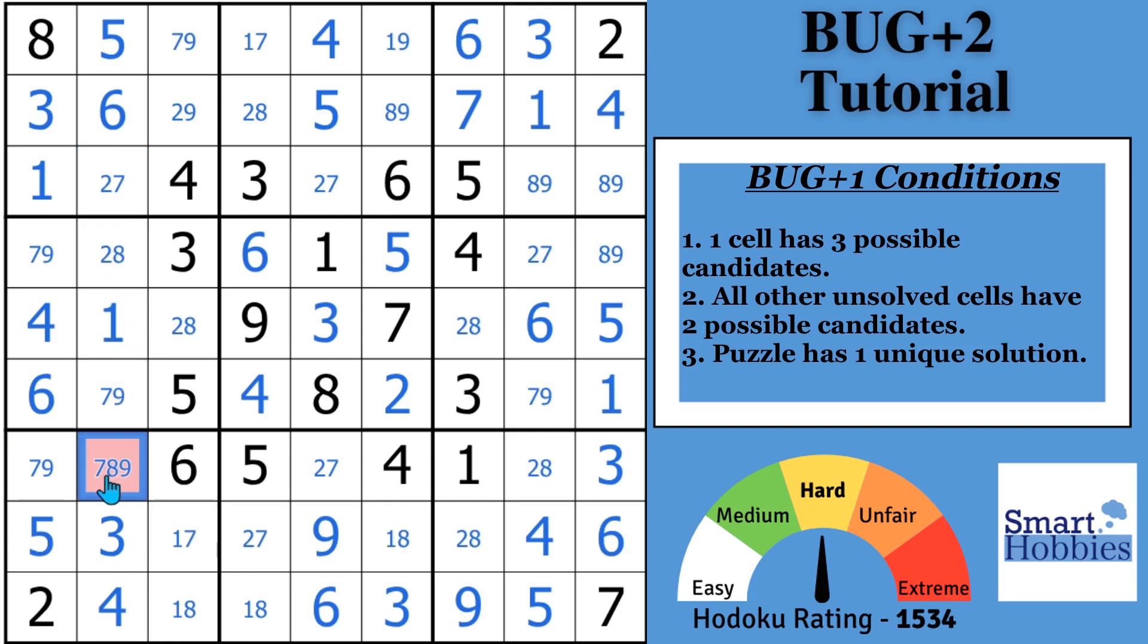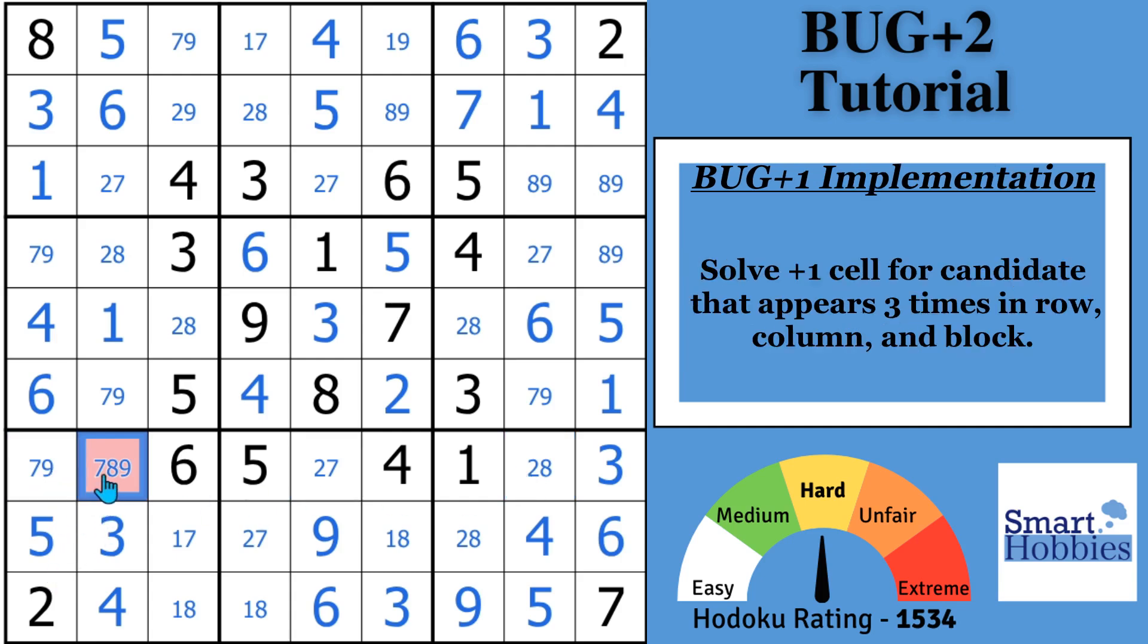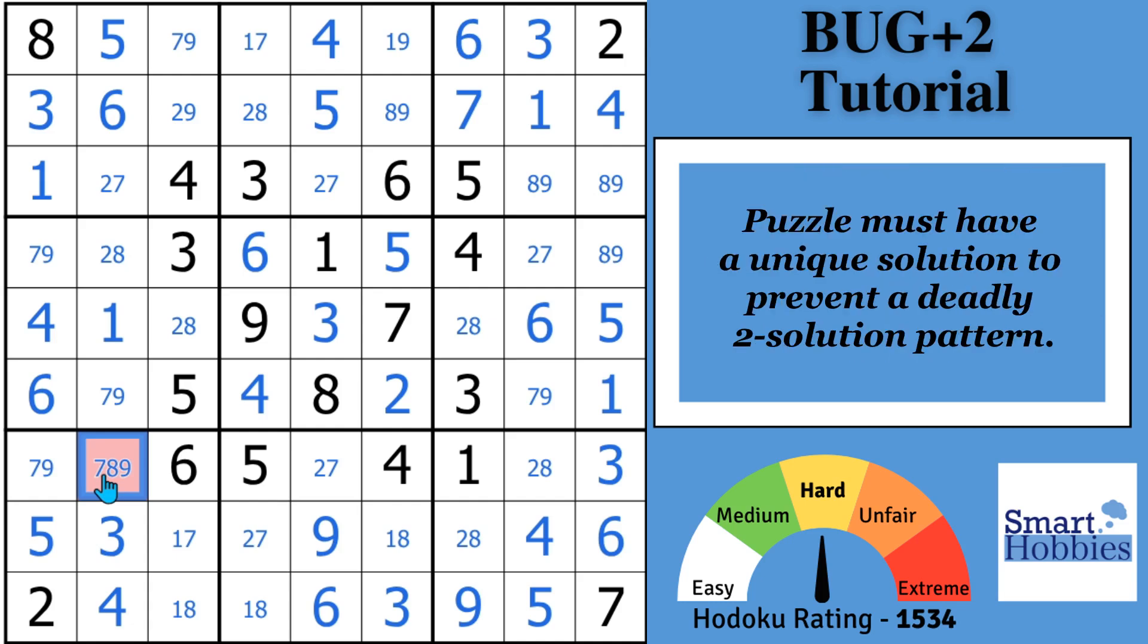So whatever candidate appears three times, you plug it right there, and you'll be able to solve the rest of the puzzle. If the puzzle has a unique solution, you can use this.